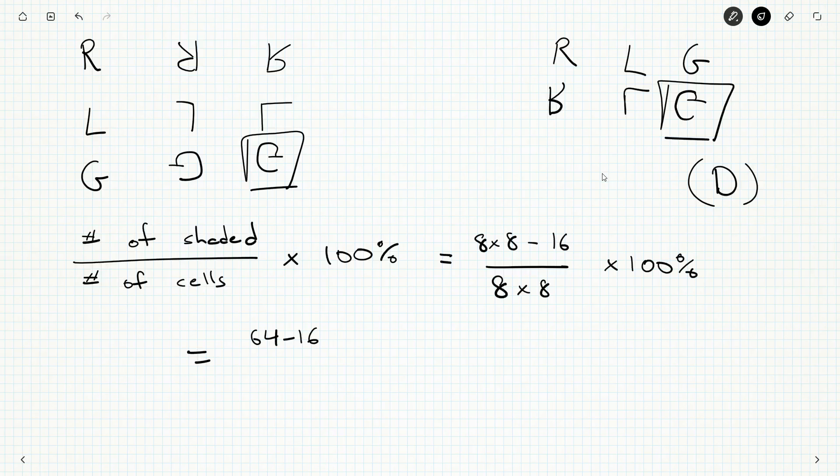The remaining eight by eight minus 16 are shaded and eight times eight is 64. So we have 16, 64 cells remove the 16 that aren't shaded and you'll get 48 out of 64.